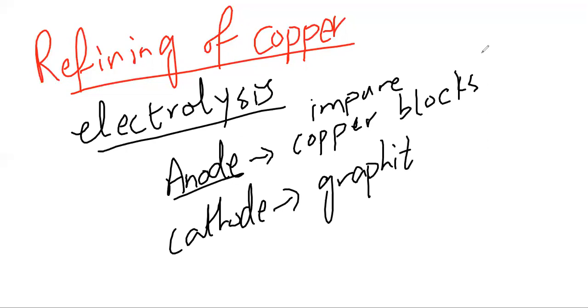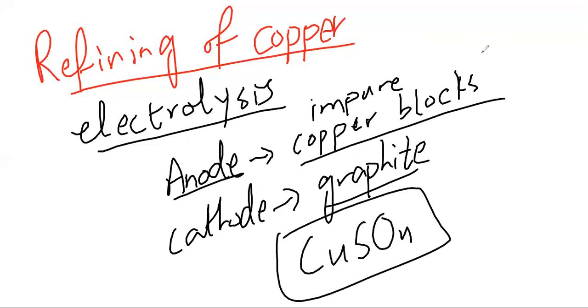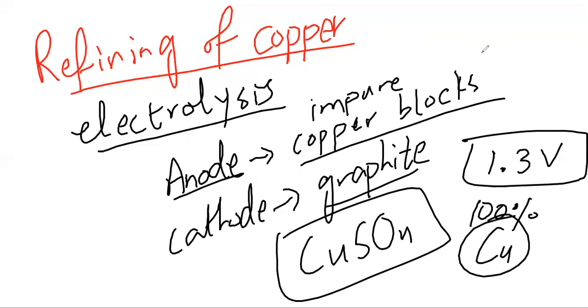The electrolytic cell is filled with copper sulfate solution, CuSO4. Acidified sulfuric acid is also used. The current we provide is 1.3 volts. This produces 100 percent pure copper. The impurities remain at the anode as mud. Impurities remain at anode and we extract the copper from cathode.